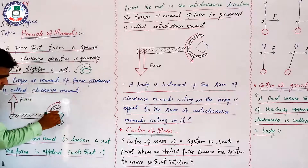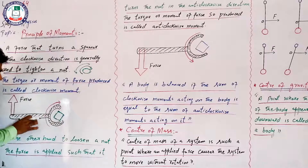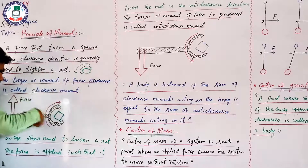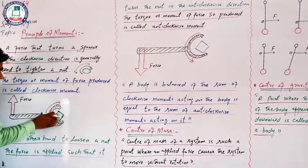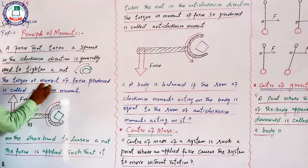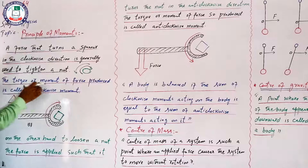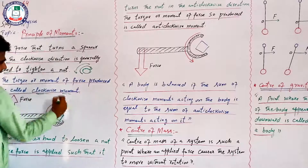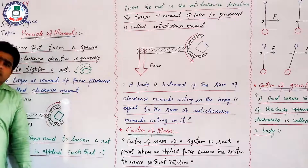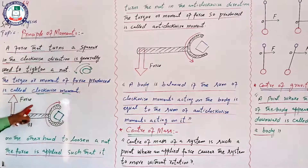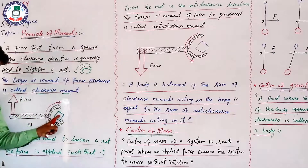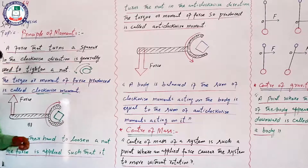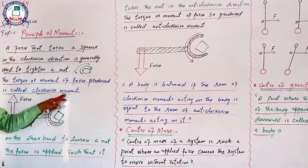जब आप nut को tight करने के लिए spinner को clockwise direction में force लगाएंगे तो nut tight होगा। इस तरह से जो torque produce होगा उसे हम clockwise moment कहेंगे। Clockwise direction में spinner को move करवाके nut को tight किया जाता है — यही clockwise moment की definition है।